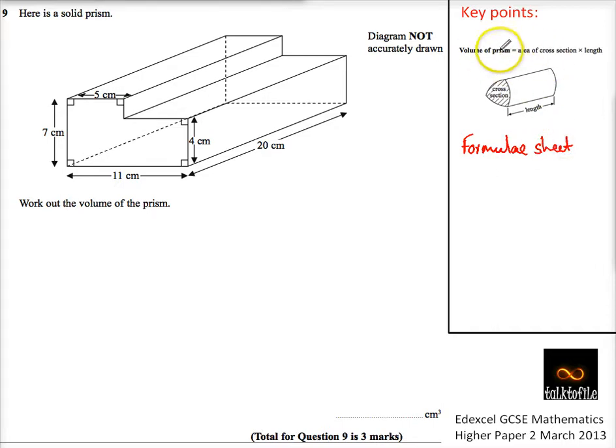The volume of a prism, this is a prism. Volume of the prism is the area of the cross section times the length. That means it's the area on the end, whatever that is, times by the length.